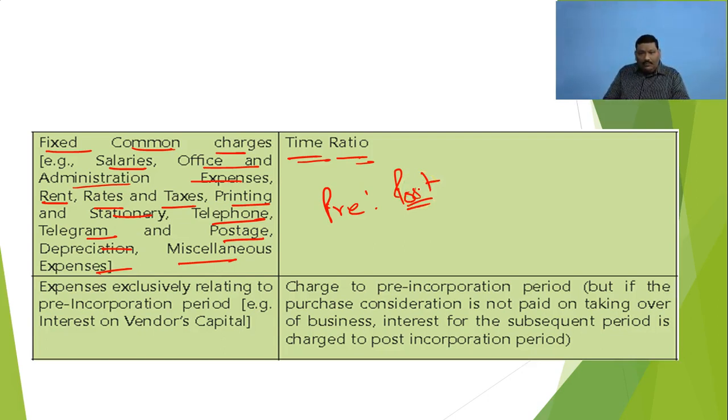Mainly there are two ratios: sales ratio and time ratio. That will be the base of distribution for all these expenses and profits.